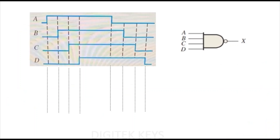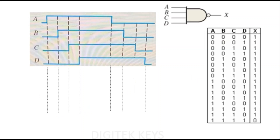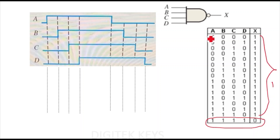Now let's move to the third problem — the four-input NAND gate. We draw the truth table for four inputs. Since we already did it for two-input and three-input, the pattern is the same: for a NAND gate, only when all four inputs are 1 do you get output 0. If any one of the inputs is 0, you get output 1. We follow the same approach as the three-input case.